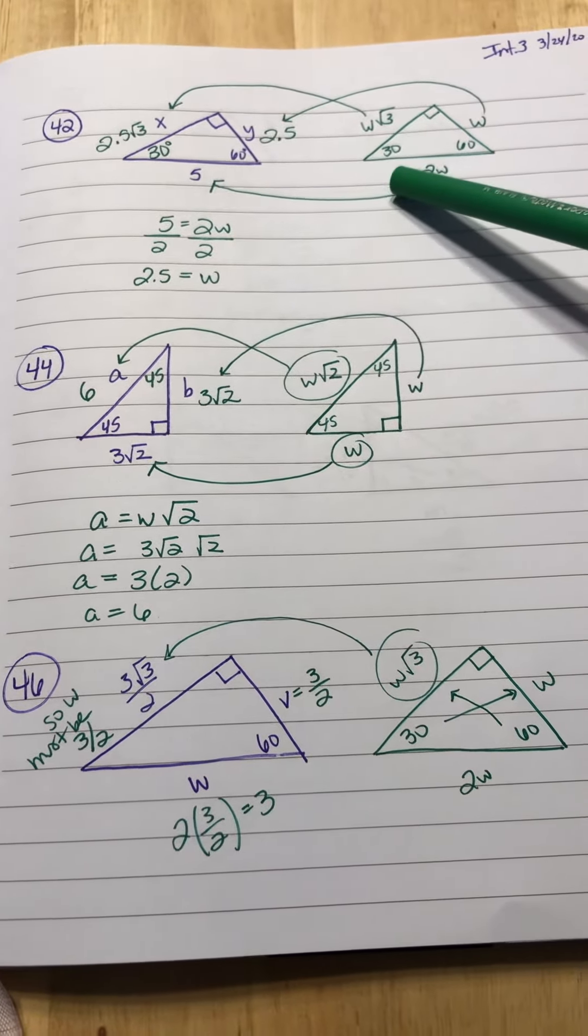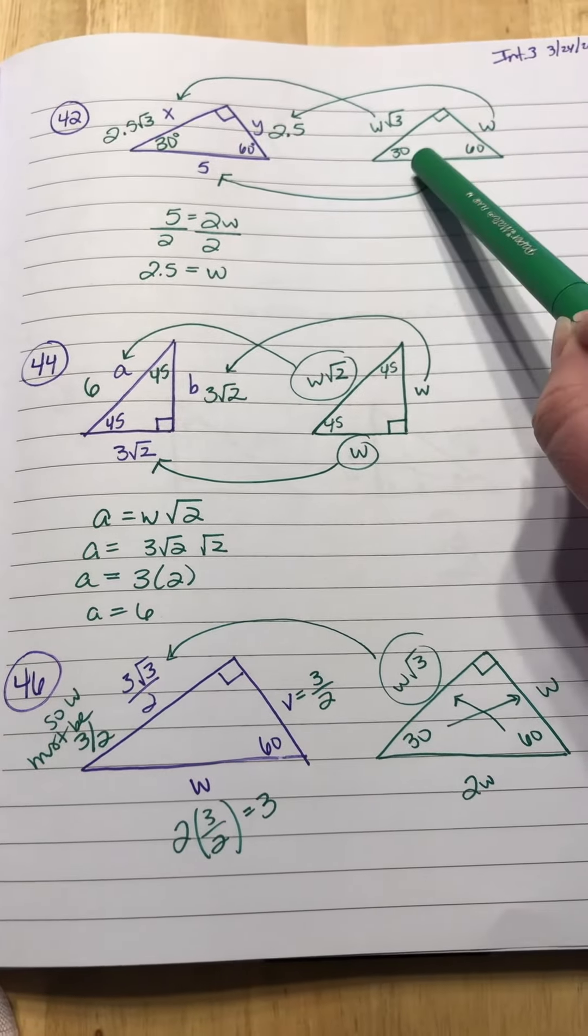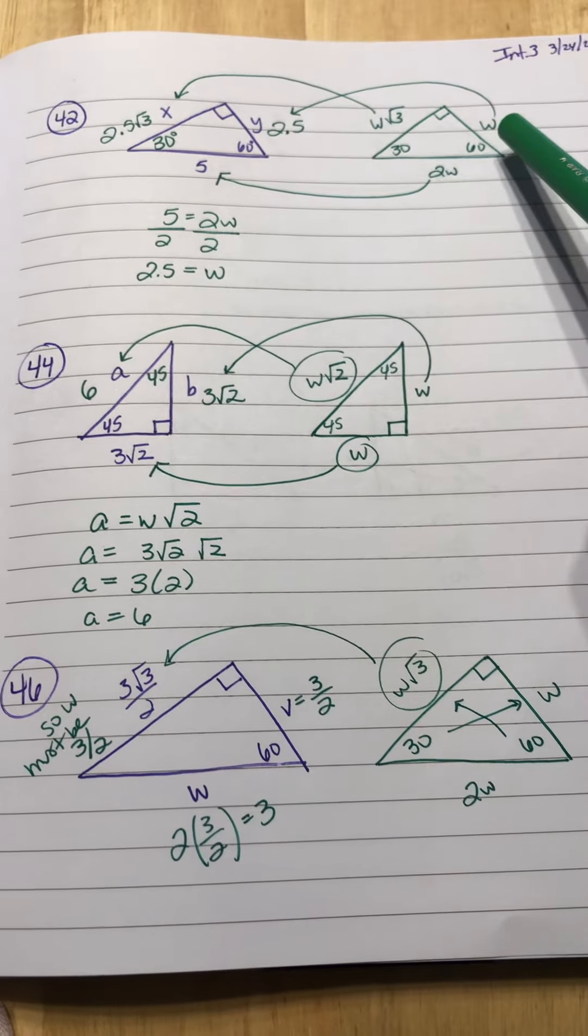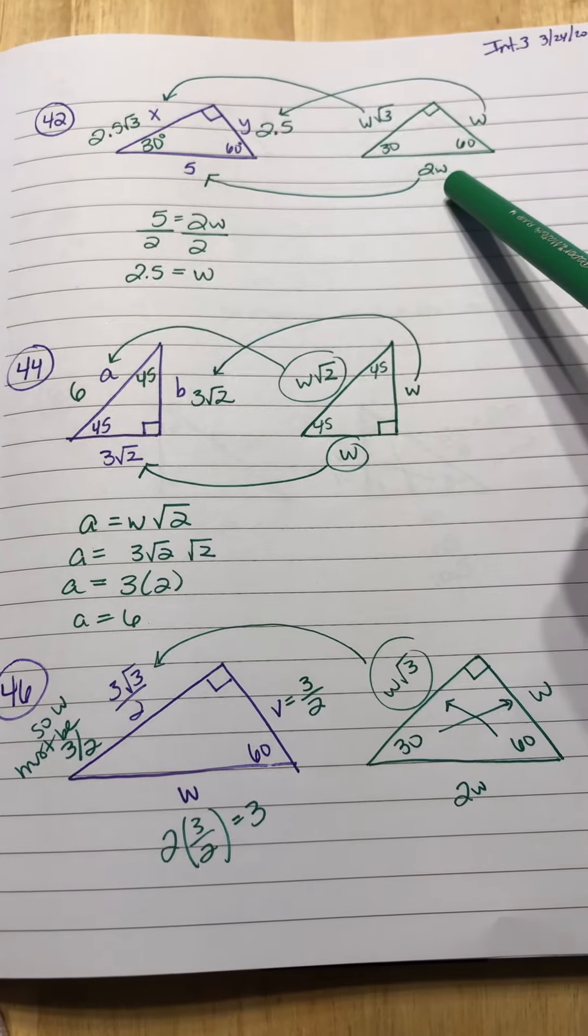So what I always do is I draw what the 30, 60, 90 triangle is supposed to look like. You know across from the 30 is your W, across from 60 is your W square root of 3, and across from 90 is your 2W.